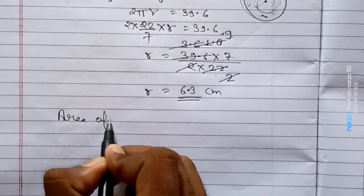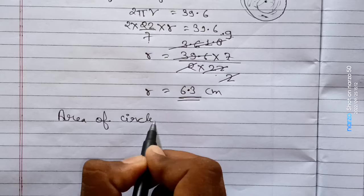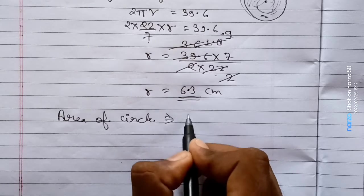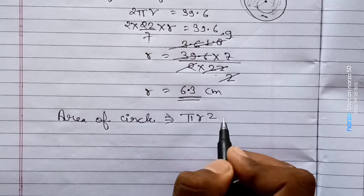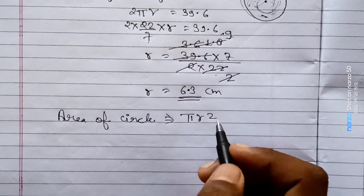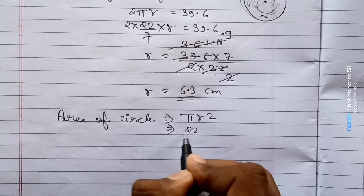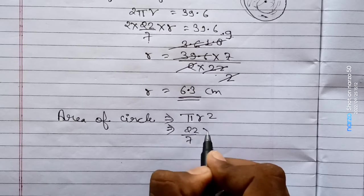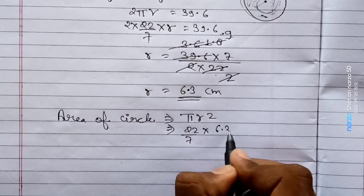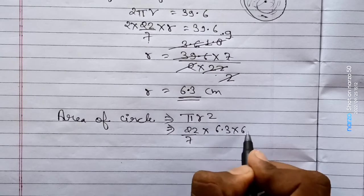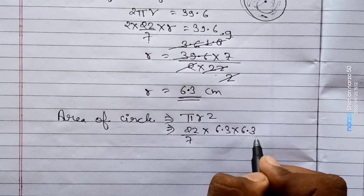The area of a circle uses the formula pi r squared. We put in 22 by 7 into r, which is 6.3, into 6.3.